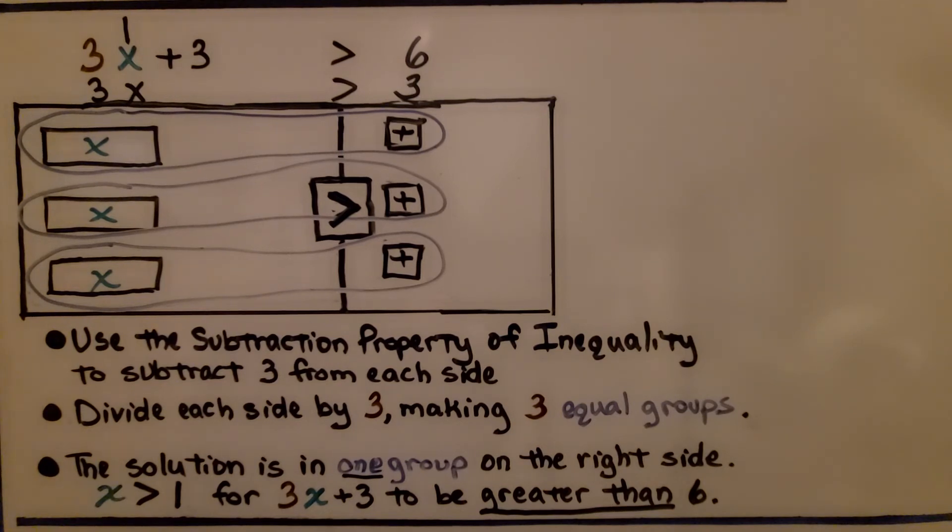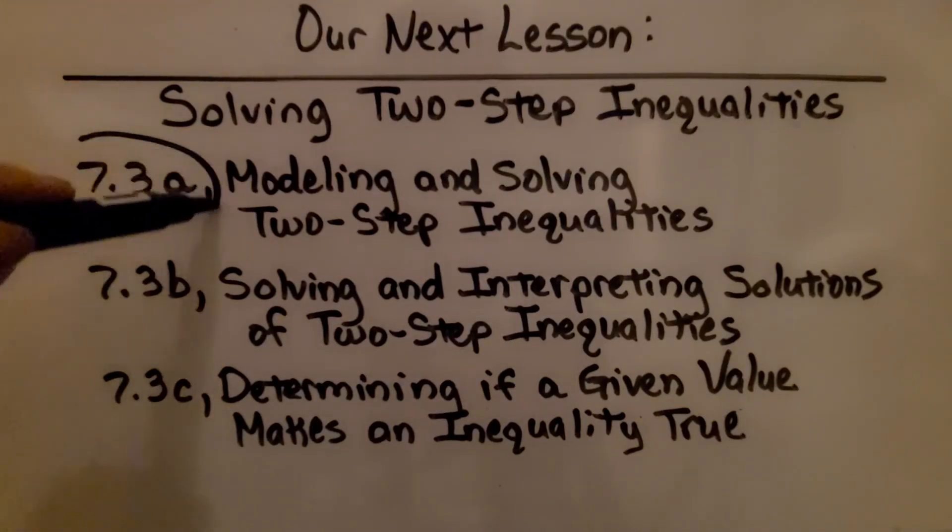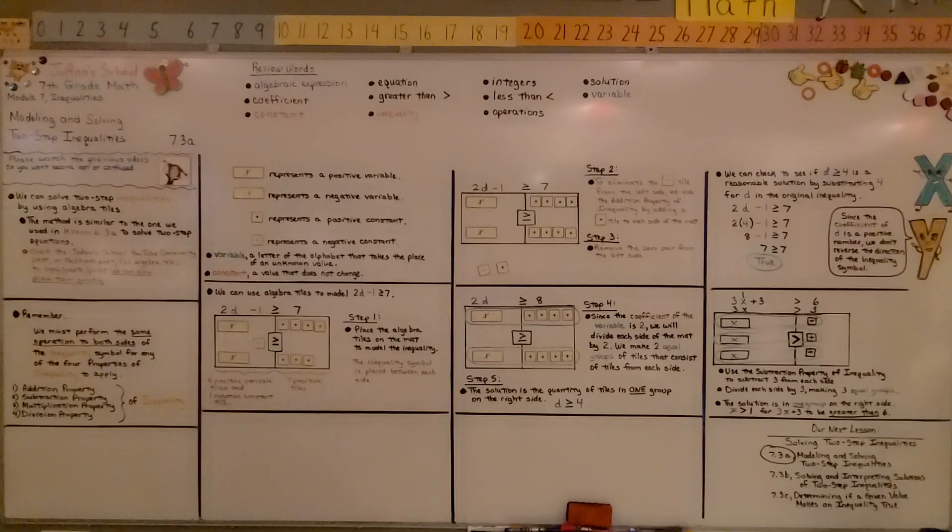We have no idea how much greater, we just know that it's greater than 1. We finished the first part of 7.3. We're going to move on to the second part, solving and interpreting solutions of two-step inequalities. Remember, because we're dealing with inequalities, the solution will not have an equal sign. It might have a greater than or less than or equal to sign, but it won't have just an equal sign. That's for equations.